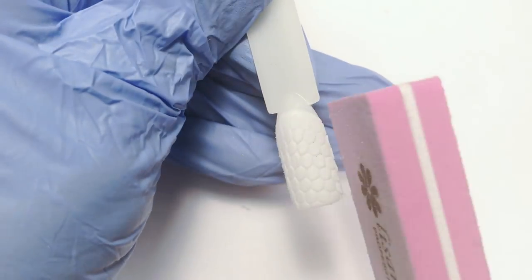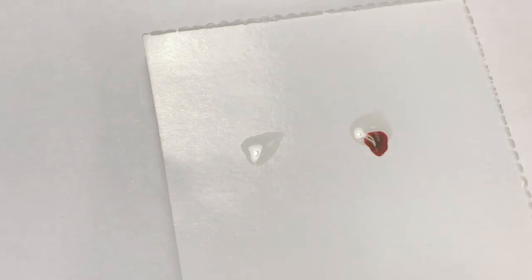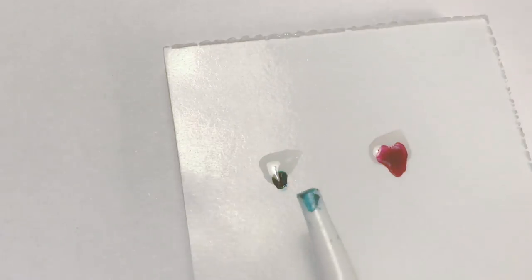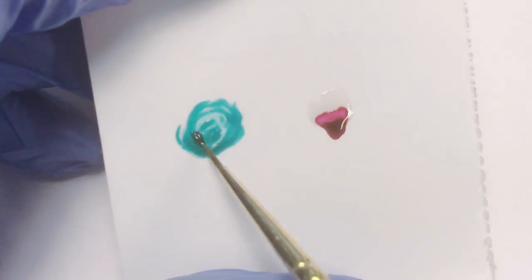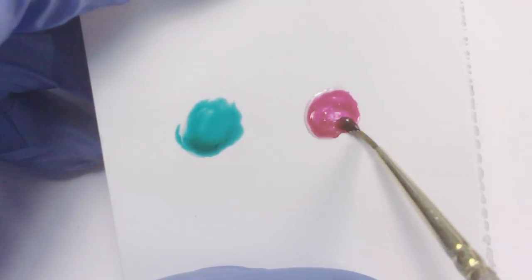Now let's color the egg. I will take two drops of no-cleanse gel top coat and add a drop of stained glass paint Parma Pink and another green color. Mix them with a brush. If you have glass gels or glass gel polishes, don't worry about this step - I just don't have them as much.